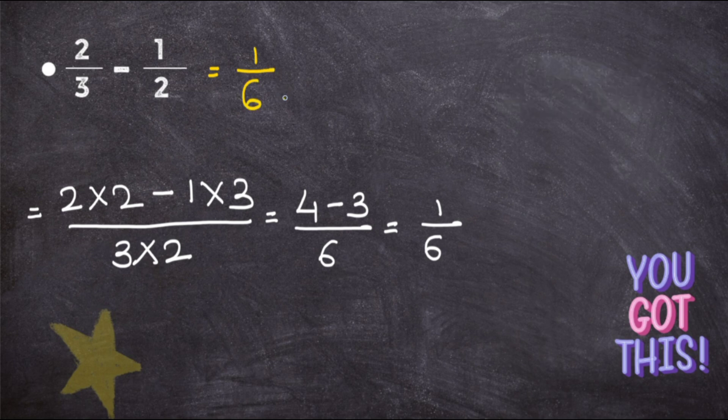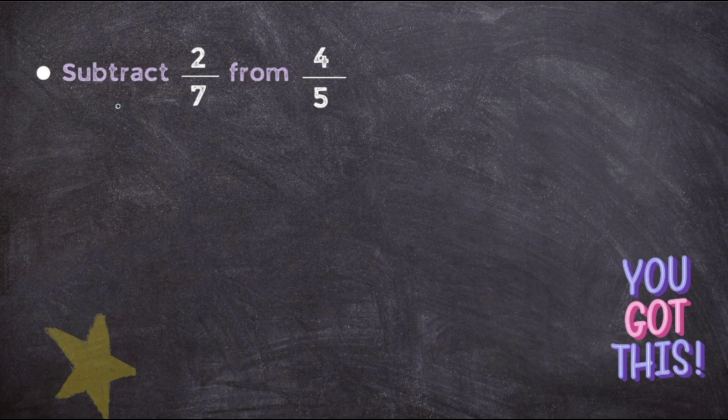Again, check whether it is in the simplest form. Yes, it is in the simplest form. Let's take one question which I thought might be confusing for you. The question says: subtract 2 upon 7 from 4 upon 5.